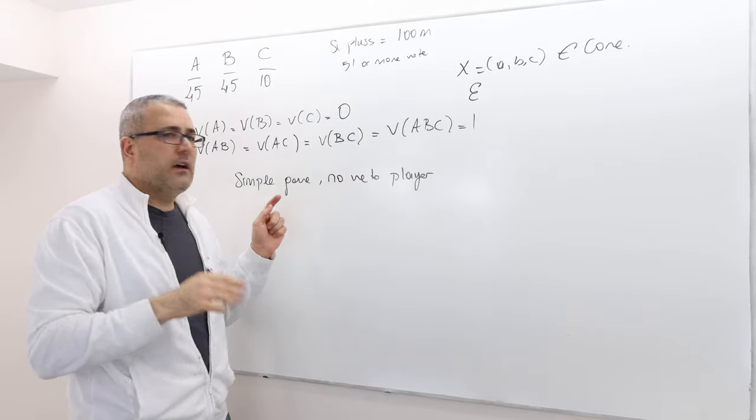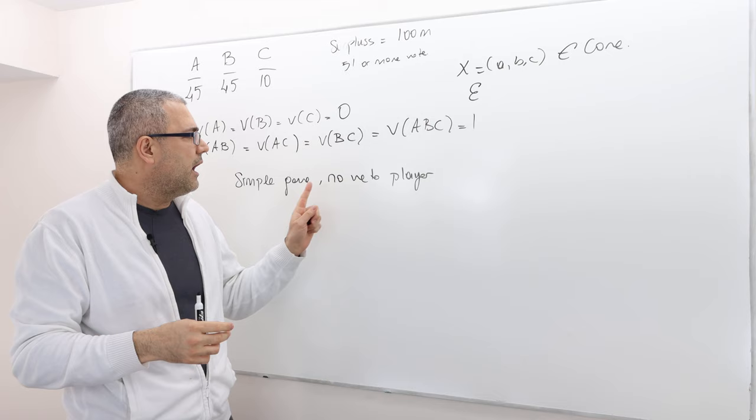So we have a theorem I mentioned in one of the lecture videos. If the game is a simple game and if there's no veto player, well then a core is empty.